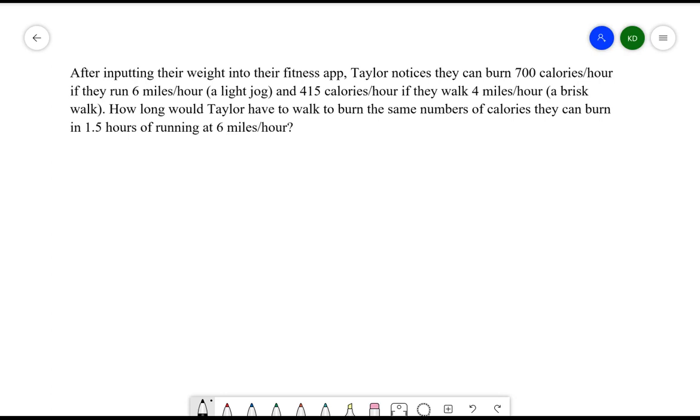Just to highlight some key information here, we can burn 700 calories an hour if we are running, and 415 calories an hour if we are walking. What we want to know is how long do I need to walk for so that I burn the same number of calories if I were to run for 1.5 hours. So what we need to do here first is figure out how many calories am I going to burn when I am running.